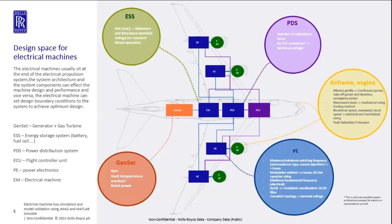On this slide, I sketched a rough system architecture for a hybrid electric aircraft, and I pinpointed the components that can affect the electric machine design boundary conditions. Since the focus of this presentation is power electronics, I'll focus on the bottom-right circle — power electronics — which has maximum and minimum switching frequencies based on semiconductor type, different modulation methods affecting DC link capacitor sizing and inverter losses, and defines the maximum fundamental frequency for the electric machine. All these parameters affect the electric machine losses and performance.